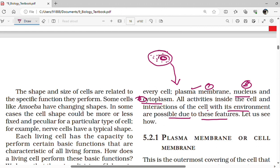Outside the nucleus and inside the cell membrane there is a jelly-like fluid portion called cytoplasm. All the activities inside the cell and interaction of the cell with its environment are possible due to these features.